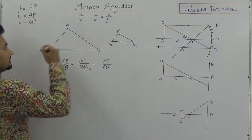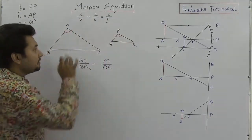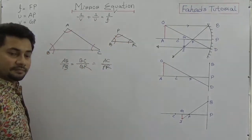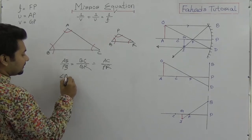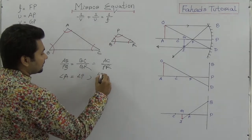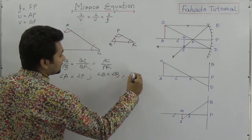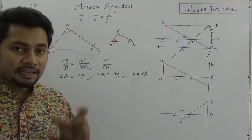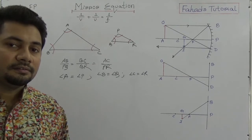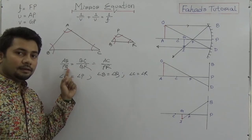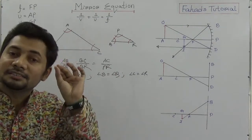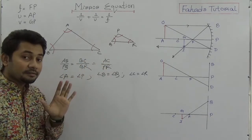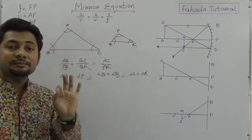We also can say that angle A = angle P, angle B = angle Q, and angle C = angle R, if triangle ABC and triangle PQR are similar. This is basic geometry and it is very normal. So AB/PQ = AC/PR because these two are similar triangles.